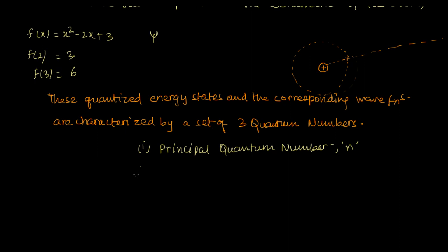The second quantum number that comes into play is the azimuthal quantum number, denoted by L.